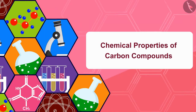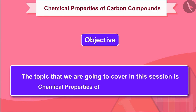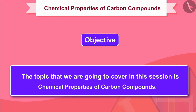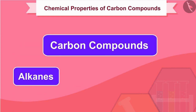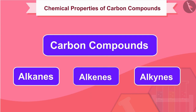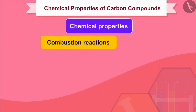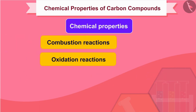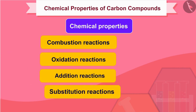Welcome to this video session. The topic we are going to cover is Chemical Properties of Carbon Compounds. The most common carbon compounds are hydrocarbons, which are alkanes, alkenes and alkynes. The chemical properties we are going to study are combustion reactions, oxidation reactions, addition reactions and substitution reactions.